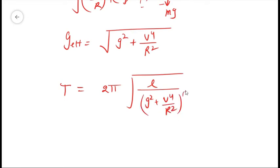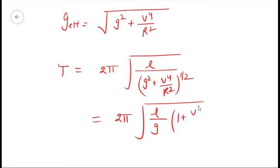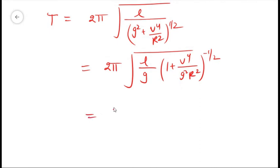That can be written as 2π√(L/g) × (1 + v⁴/(g²r²))^(-1/2), and this can be written as 2π√(L/g) × (1 + v⁴/(g²r²))^(-1/4).